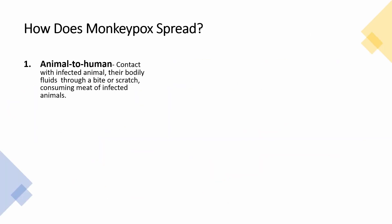Monkeypox can spread through animal-to-human transmission, which can happen by petting infected animals, coming into contact with their bodily fluids via a bite or scratch, or through consuming meat of infected animals. In Africa, evidence of monkeypox virus infection has been found in many types of animals, including rope squirrels, tree squirrels, dormice, bats, rodents, and different species of monkeys.